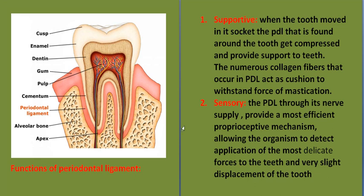Functions of the periodontal ligament: number one, supportive. When the tooth is moved in its socket, the PDL that is found around the root gets compressed and provides support to the teeth. The numerous collagen fibers that occur in the PDL act as a cushion to withstand the force of mastication.